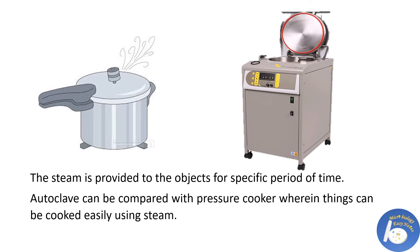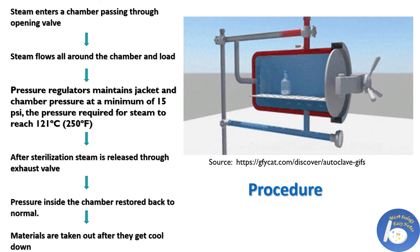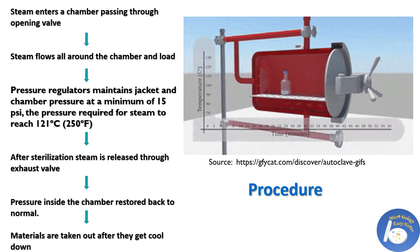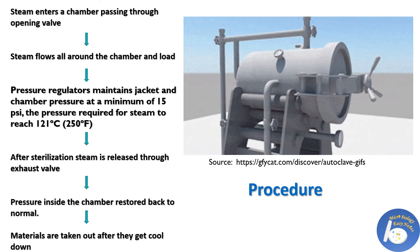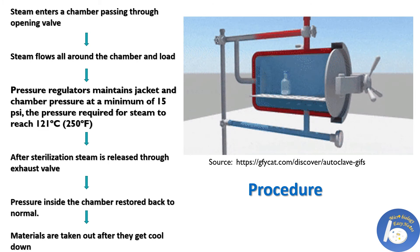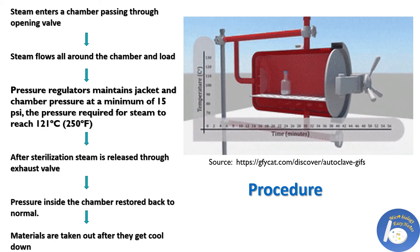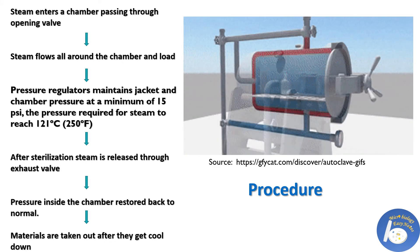Thus autoclaving is a dependable procedure to kill all forms of life. Steam is provided to objects for a specific period of time, otherwise 100% sterilization cannot be achieved. Autoclave can be compared with a pressure cooker. Steam enters the chamber through an opening, flows all around the chamber and load. Pressure regulators maintain the pressure of jacket and chamber at a minimum of 15 psi, which is required for steam to reach 121°C. After sterilization is complete, steam is released through the exhaust, pressure inside the chamber is restored to normal, and materials are taken out after cooling down.